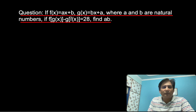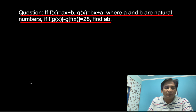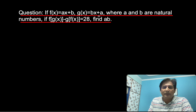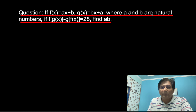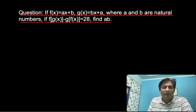In this question, f is given as Ax plus B, g is given as Bx plus A, where A and B are natural numbers, and one condition is given: f(g(x)) minus g(f(x)) equals 28.